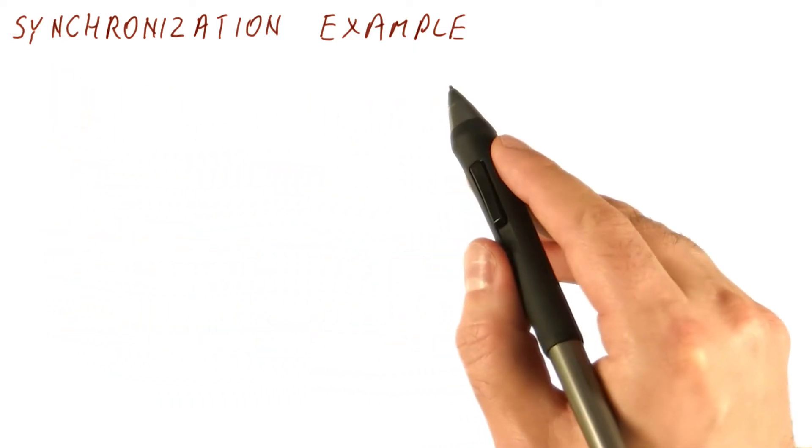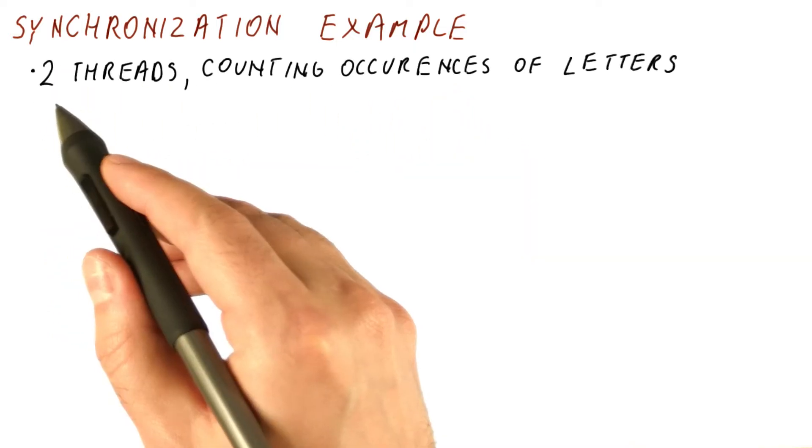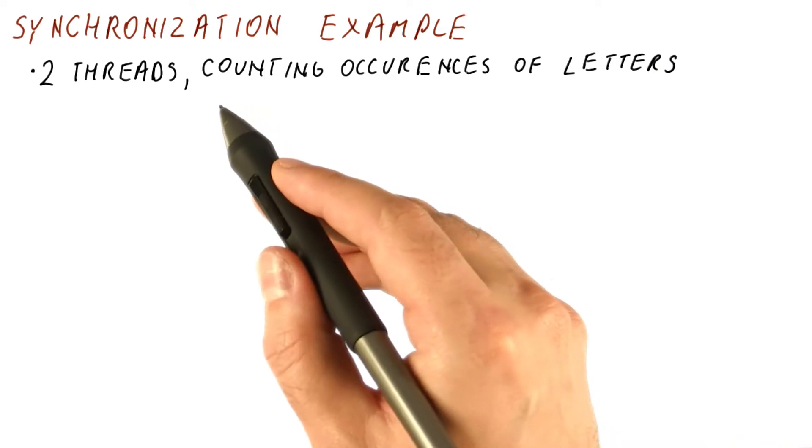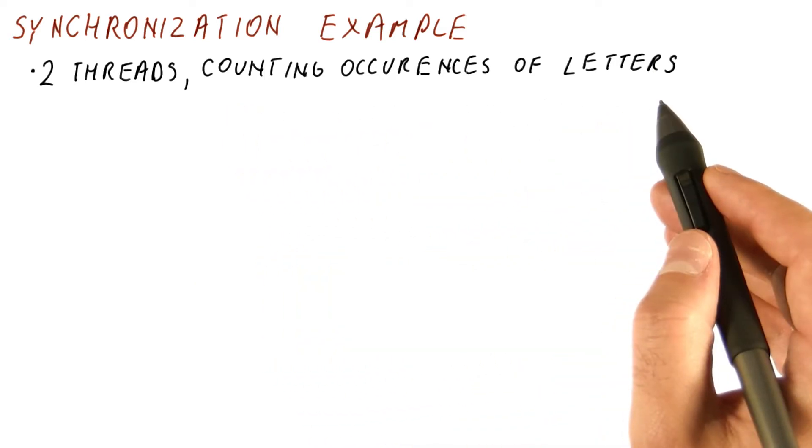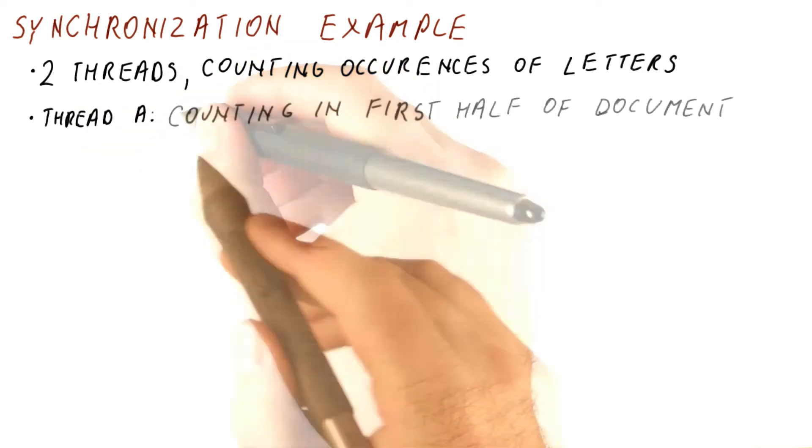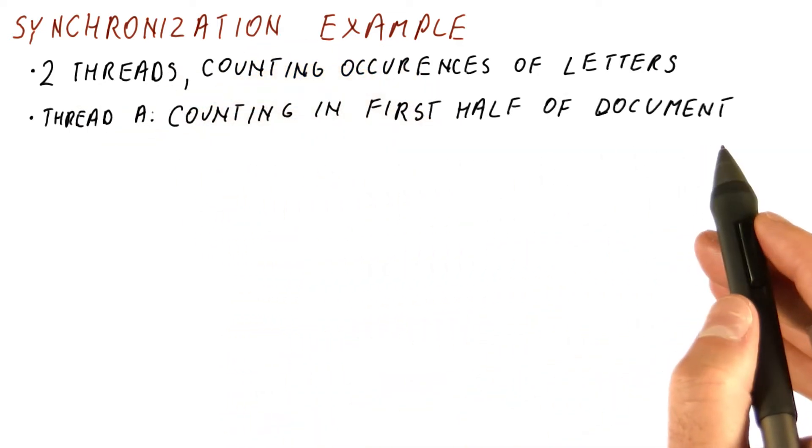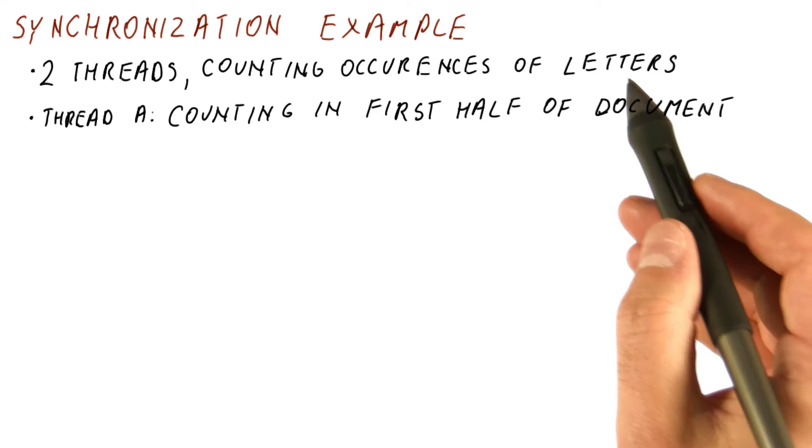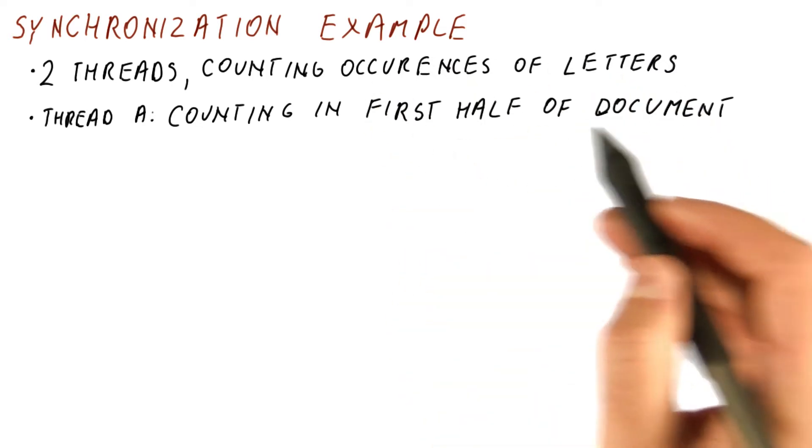So let's look at one example of why we may need synchronization. Let's say we have two threads, and what they're doing is counting occurrences of different letters in a document. The first thread, let's call it thread A, is counting in the first half of the document, so it's going to count occurrences of each letter in the first half of the document.